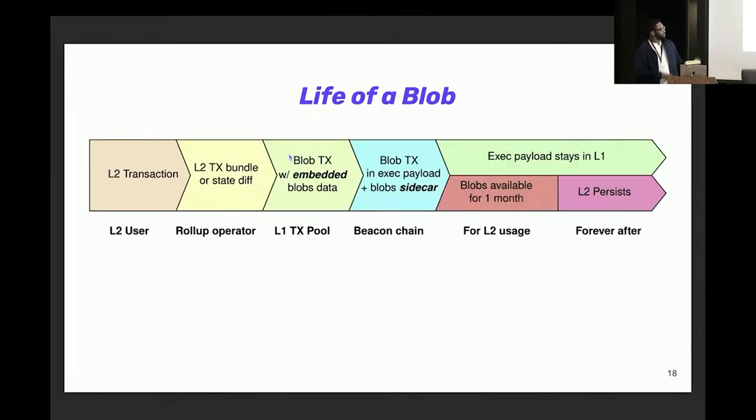The data that we're posting, we refer to it as a blob. Think of it as like call data, it doesn't really matter what it is. This blob goes through a lifecycle that this slide summarizes. The L2 transaction that a user posts, as a user to interact with L2 like Optimism, they generate a transaction. At certain periods, an L2 sequencer or rollup operator will bundle up several of these transactions, and then we post these transactions to L1. Previously, today, we post these transactions as call data. The ideal is that we post these transactions as a blob.